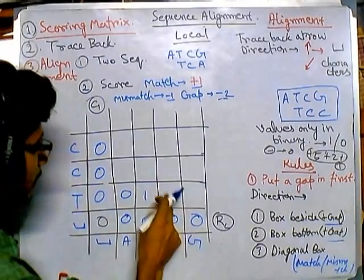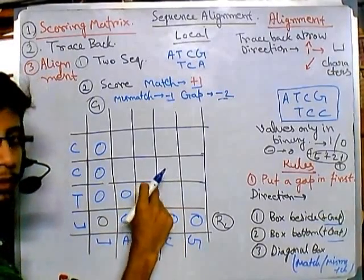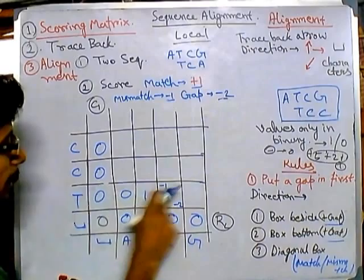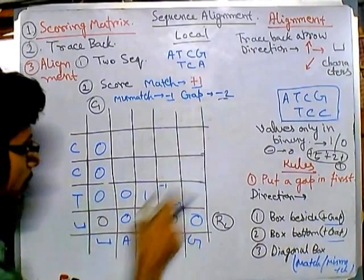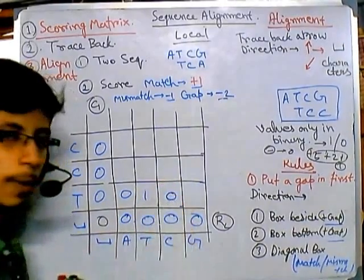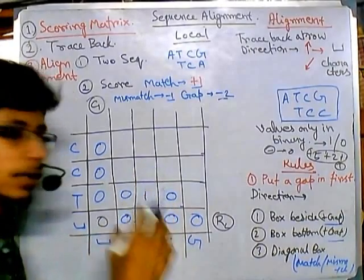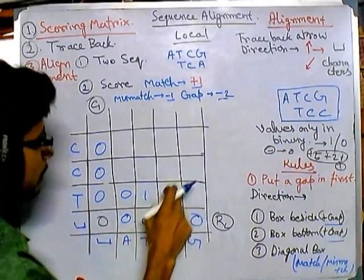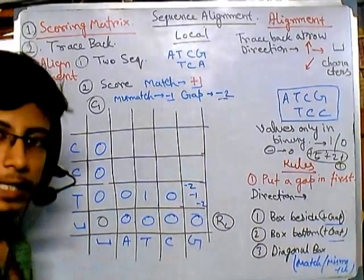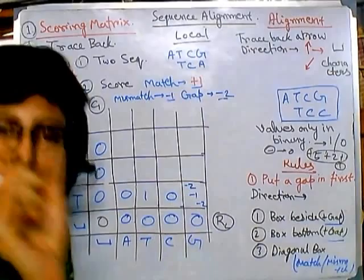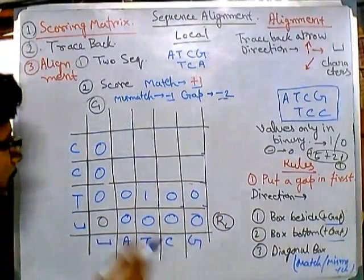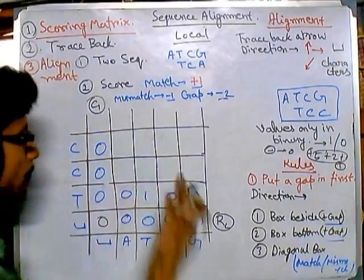Continuing: from side 1 − 2 = −1, from below 0 − 2 = −2, from diagonal T vs C is a mismatch so −1 plus 0 = −1. Highest value is −1, which is negative, so we place 0. Next: 0 − 2 = −2, 0 − 2 = −2, T vs G is a mismatch so −1 plus 0 = −1. Highest is −1, still negative, so we place 0.